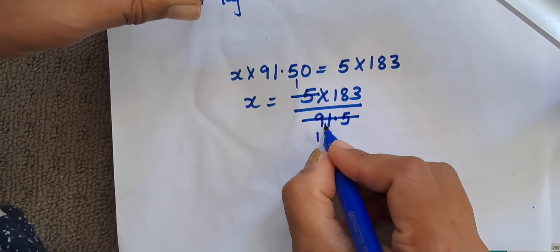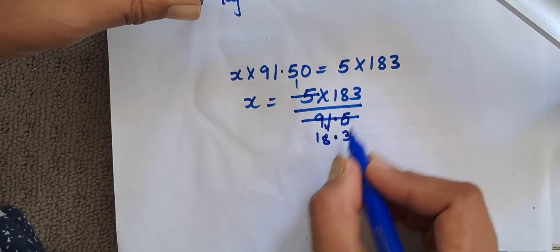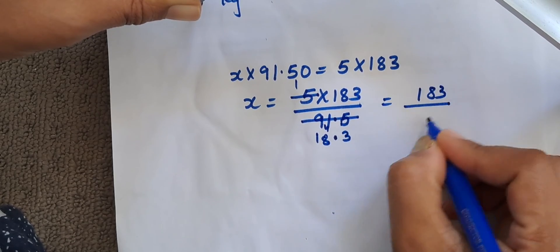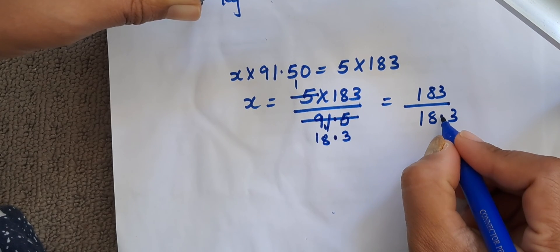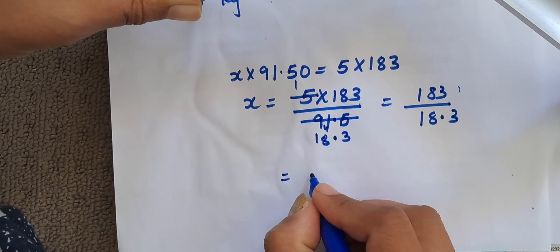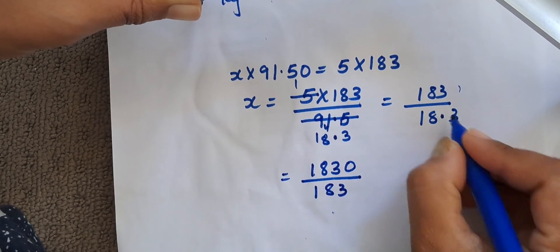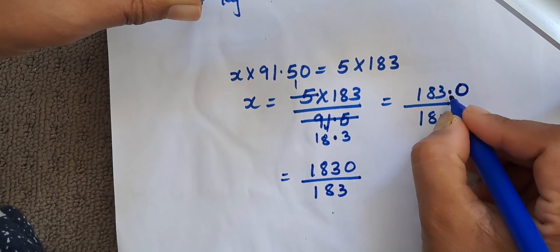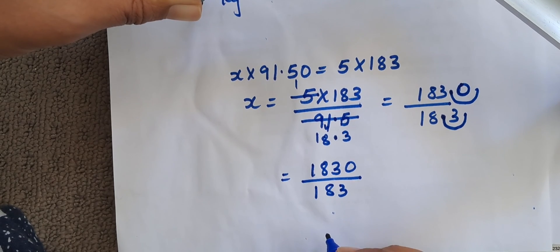5 and the 5, 5 eighths are 40, 5 threes are 15. 183 divided by 18.3. When we take 1 decimal to the right hand side, we can add 1 zero on top. We do that. 1830 divided by 183. Because we are taking 1 decimal point right, so 183.0 becomes 1830. So 1830 divided by 183.